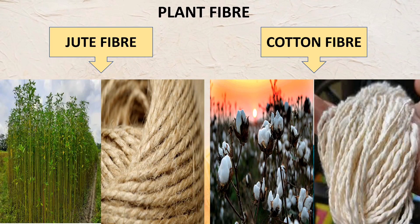Some examples of plant fiber are jute fiber and cotton fiber. You can see jute plants from which jute fiber is extracted. This jute fiber is used for making different kinds of jute bags and jute ropes.